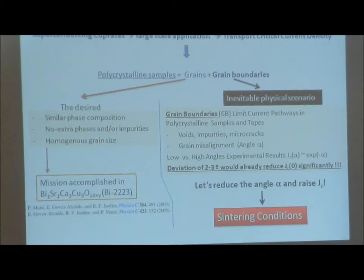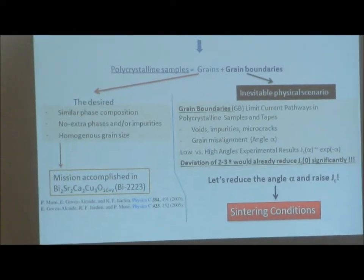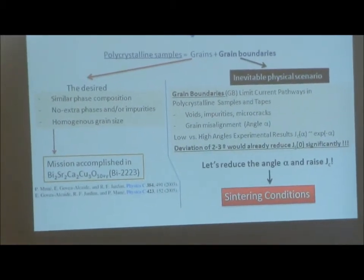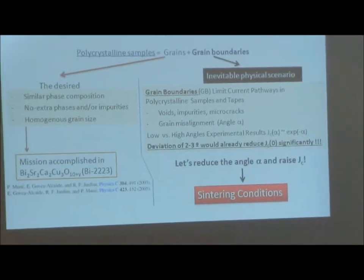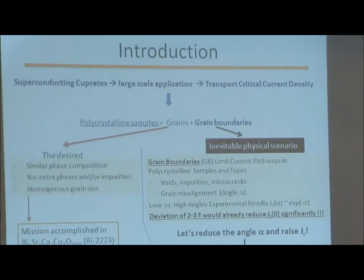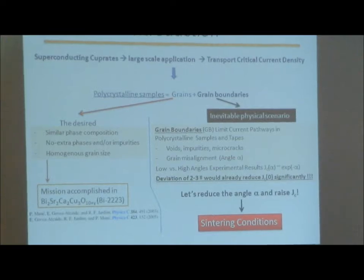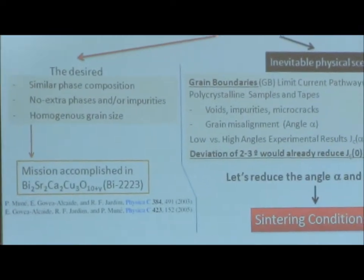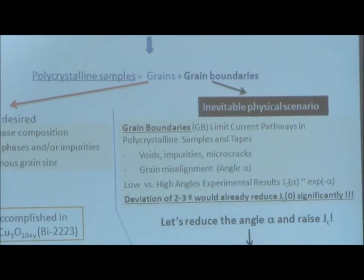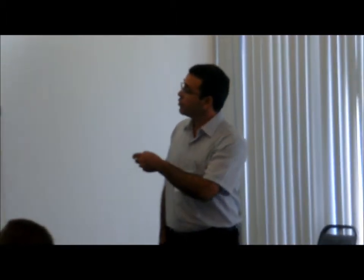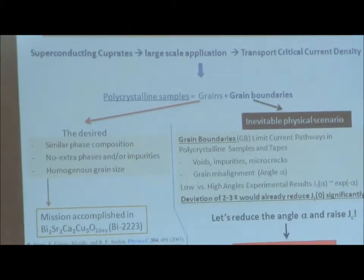In the case of the grains, the problems can be associated with grains with no single phase compositions, the presence of extra phase or impurities, and probably associated with the broad distribution in the grain size. In our case, our group achieved this goal. In the case of polycrystalline superconductor, we can obtain similar samples from the YBCO phase of the BSCCO family. On the other hand, the grain boundary seems to be the...